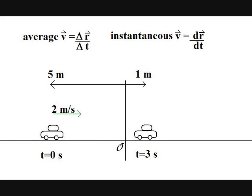No matter what the case may be, if that car started at negative five meters and ended up at positive one meter three seconds later, the average velocity was two meters per second to the right, or positive two meters per second.